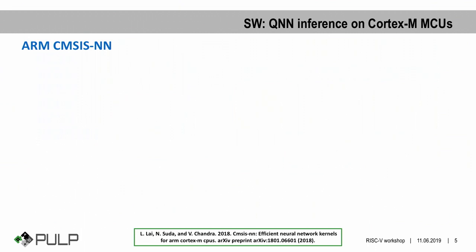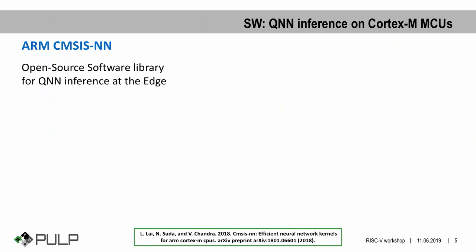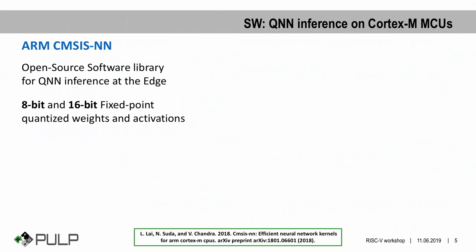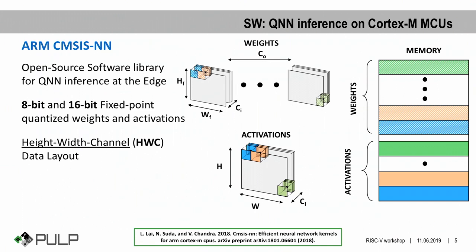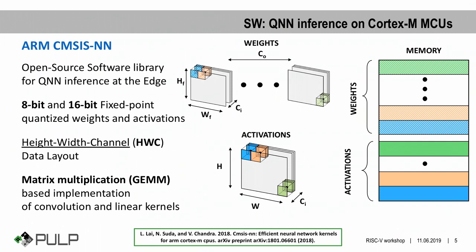In the IoT domain, software must efficiently exploit all the features of the target architecture. Our software solution is based on ARM CMSIS-CNN, an open-source library for QNN inference at the edge, highly optimized to target Cortex-M based processors. It relies on quantization techniques to reduce the memory footprint of networks, targeting 8-bit and 16-bit fixed-point operands. The key feature of this library is the adoption of the 8-bit channel data layout, which reduces memory transfer overhead. With this layout, activations and weights are stored in contiguous memory cells, first along the channel dimension and then along the spatial dimension.